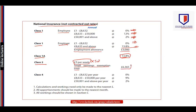Class 2 NIC is based on a small earnings exemption limit — businesses having profit up to £6,365 are not liable. As far as Class 4 NIC is concerned, the rate thresholds are similar to Class 1 employee: up to £8,632 the rate is 0%, above that 9%, and in excess of £50,000 the rate is 2%.